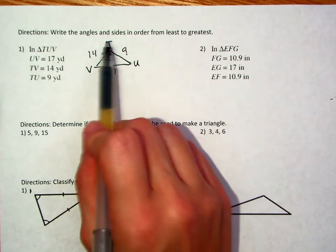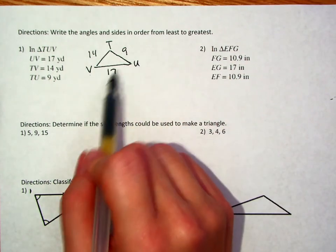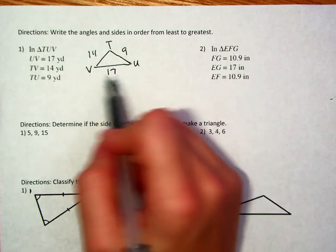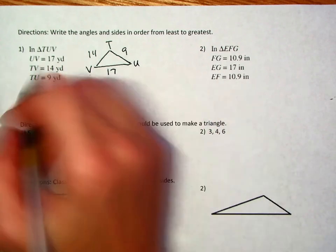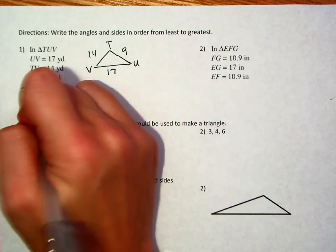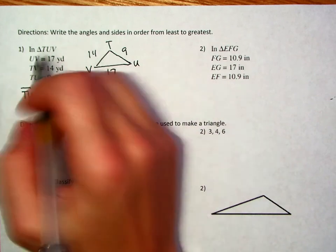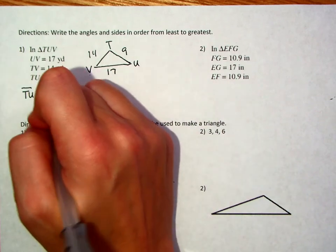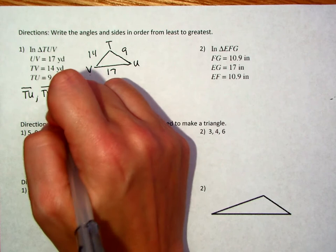So if we're going to put the angles and sides in order from least to greatest, we could start by putting the sides in order because we've definitely got all three sides. So clearly this one's the smallest, so it would go segment TU, then this would be the next largest number, 14, so segment TV, and then we go to the next largest number here, which would be VU.